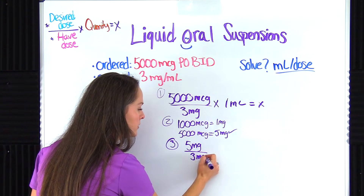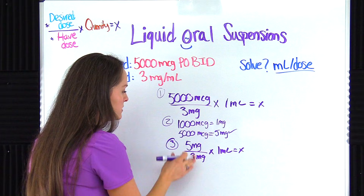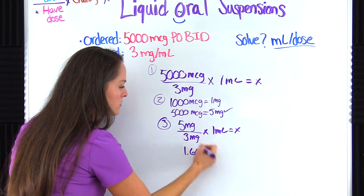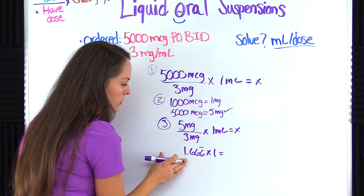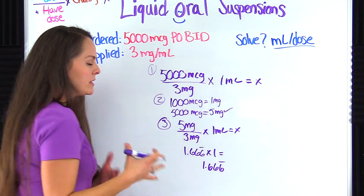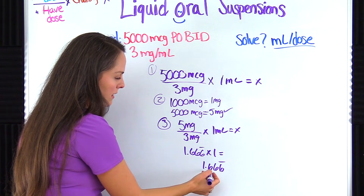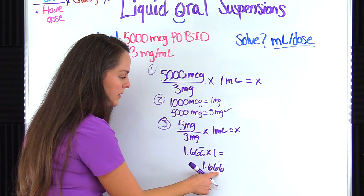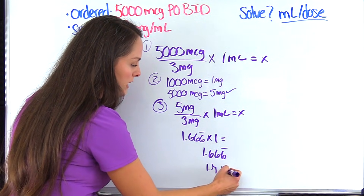We've converted 5,000 micrograms into 5 milligrams. We plug that in: 5 milligrams over 3 milligrams, times 1 milliliter, equals x. The units match now, so let's solve. We divide 5 by 3, which gives us 1.666 repeating. Don't round yet — multiply by 1, which keeps it at 1.666 repeating. Always round according to your university rules, but rounding to the nearest tenth: look at the hundredths place, which is 6 — five or greater means we round up. Our answer is 1.7 milliliters per dose.